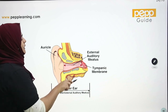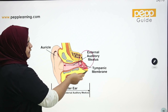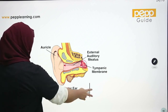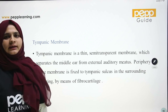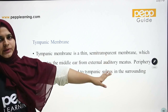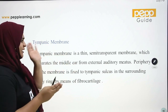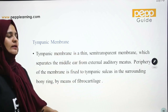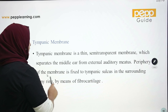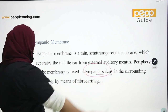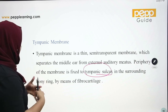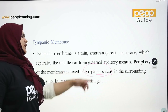This is a picture of the tympanic membrane. The periphery of the membrane is fixed to the tympanic sulcus in the surrounding bony ring by means of fibrocartilage.